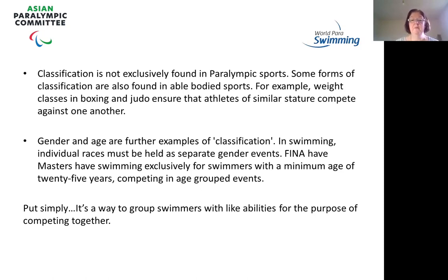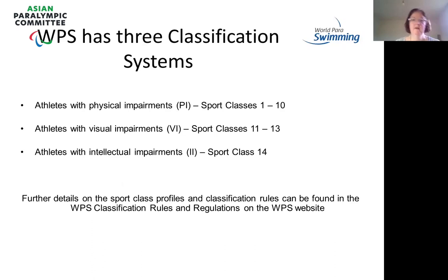Put simply, it's purely a way to group swimmers with like abilities for the purpose of competing together on a fair playing field. We have three classification systems. Athletes with a physical impairment — our PI system — have 10 classes, from class 1 to 10. Sport class 1 is our most impaired athletes, up to sport class 10 which are our least impaired athletes.